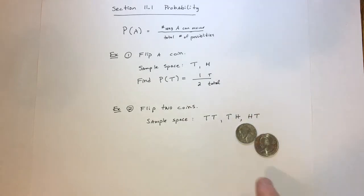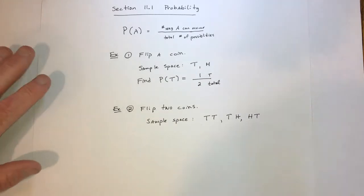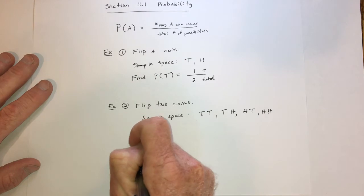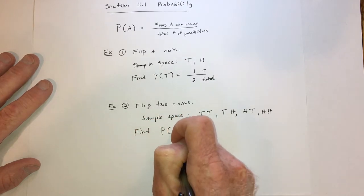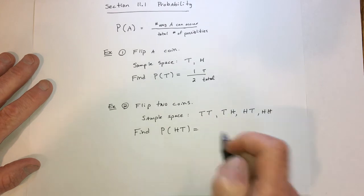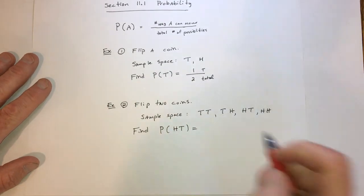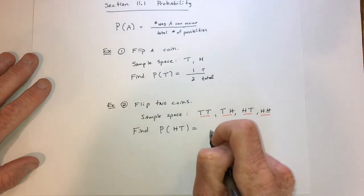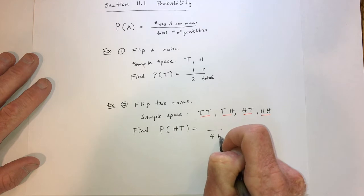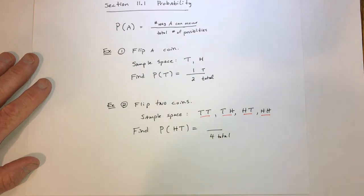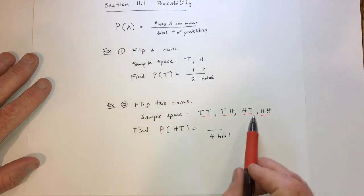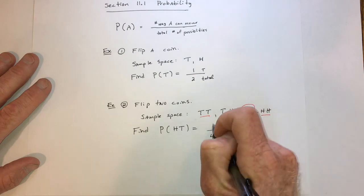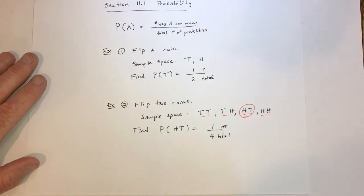It could also be heads-heads. So there are four total possibilities. The question asks: find the probability of getting heads first and tails second. Out of these four, only one has H then T. So the probability is one out of four.